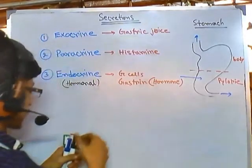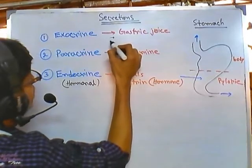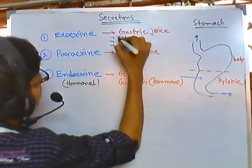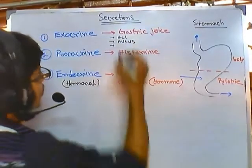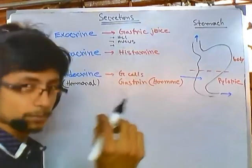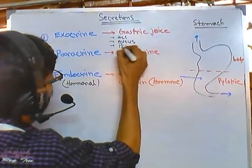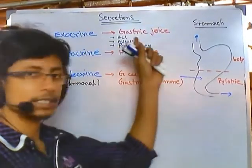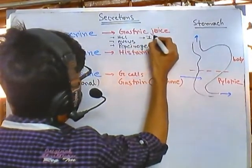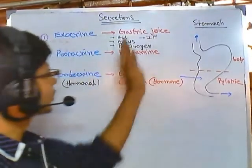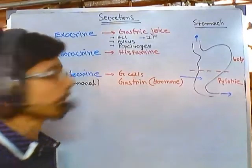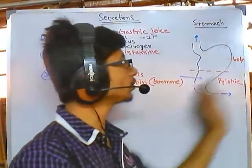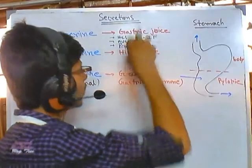Let's zoom in on the gastric juice a little bit. Gastric juice contains three major components: first is HCl or hydrochloric acid; second is mucus; and third is an enzyme called pepsinogen. The gastric juice also contains another molecule called intrinsic factor. HCl is acidic and can cause harm to the wall of the stomach, so mucus is required — it coats the stomach wall so that the gastric juice cannot cause harm.